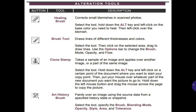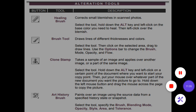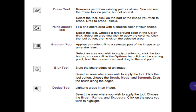Art History Brush: paints over an image using source data from a specified history state or snapshot. Select the tool, specify the brush, blending mode, opacity, style, area, and tolerance. Erase Tool: removes part of an existing path or stroke. You can use the Erase tool on paths but not on text. Select the tool, click on the part of the image you wish to erase, and drag to erase pixels.